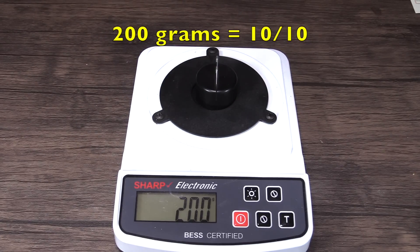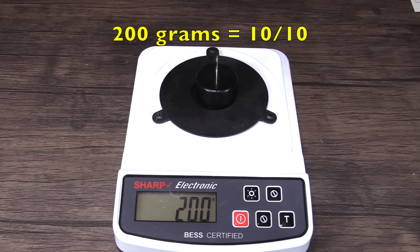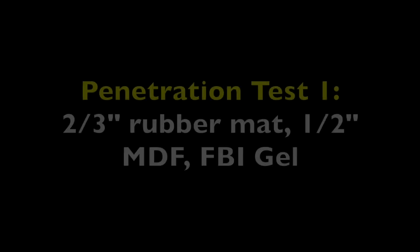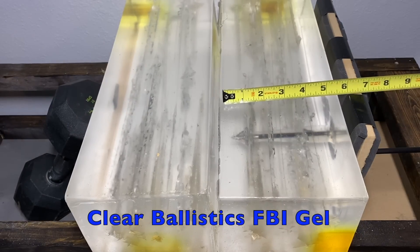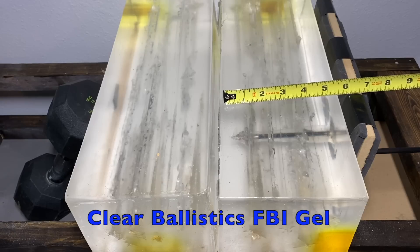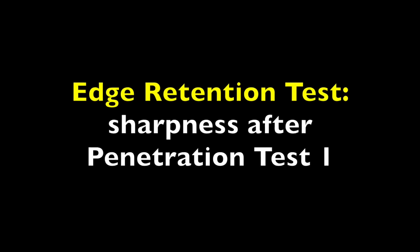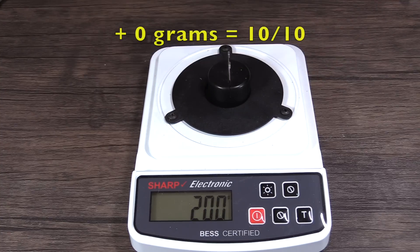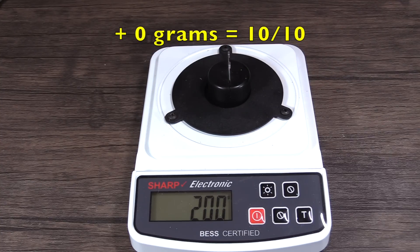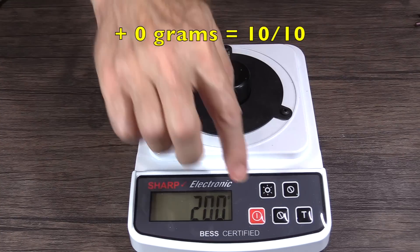It took 200 grams of force to cut through the wire, which is a 10 on a 10-point scale. It penetrated 7 inches, which is pretty impressive given that wide of a cut. It took no additional force to cut through the wire, which gives it a 10 on a 10-point scale.